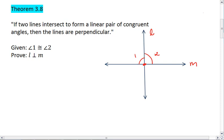So given that angle 1 is congruent to angle 2, we want to prove L is perpendicular to M. We can set this up as a two-column proof, or we can do a paragraph proof, and I'll show you what that looks like next.